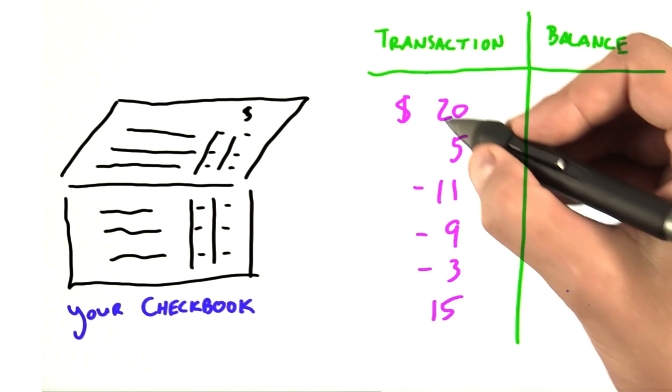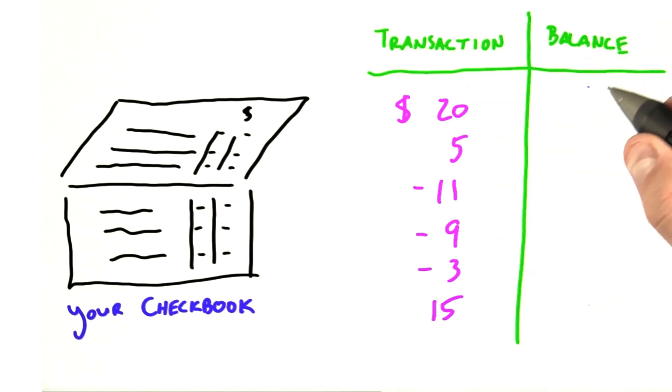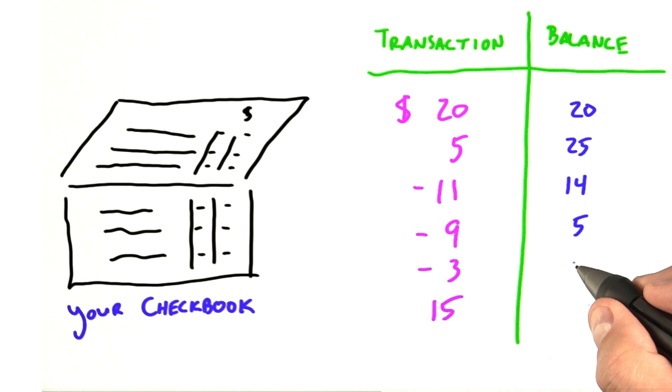So let's do this as an example. We start off with nothing in our bank and our first deposit is $20, so our bank balance is now $20. We add another $5. Then we make three withdrawals: $11, then withdraw $9 more dollars, then withdraw $3 more dollars, leaving us with $2 in our bank account. We add in another $15 and so on.